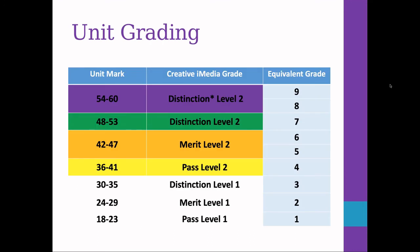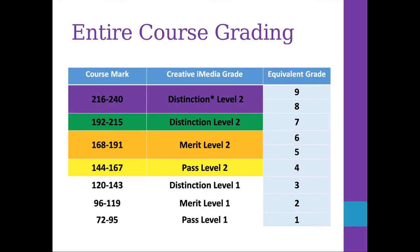The unit grading has fixed mark boundaries — unlike many exams and many qualifications, these are the unit marks and the grades you would get for each unit. So if you get 54 out of 60, you've got a Level 2 Distinction Star. If you get 35, you've got a Level 1 Distinction. The entire course also has fixed grade boundaries: to get a Level 2 Distinction Star you need 216 out of the 240 available marks. Level 2 Distinction Star is equivalent to a grade eight or nine, so we're talking A star. Level 2 Distinction is a grade seven — that's an A — and you can see the rest of them there.